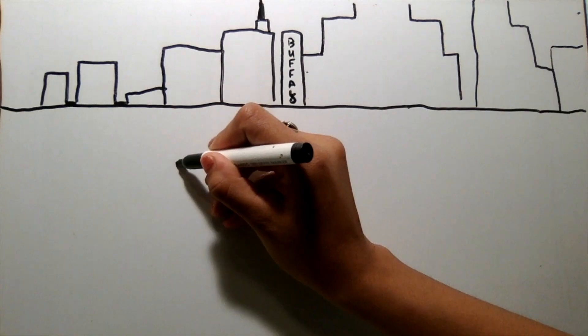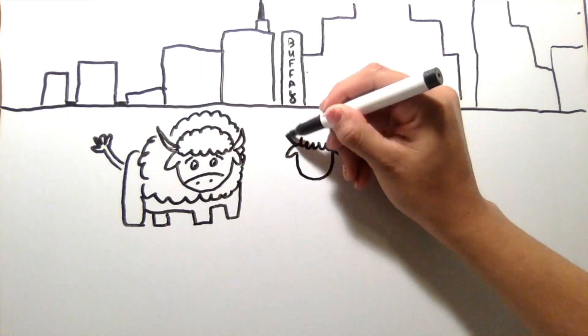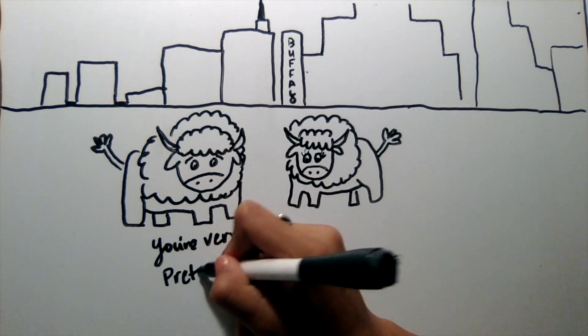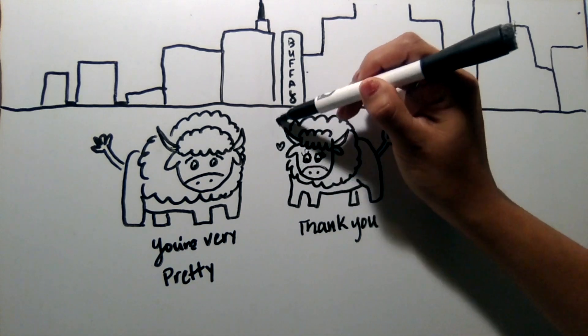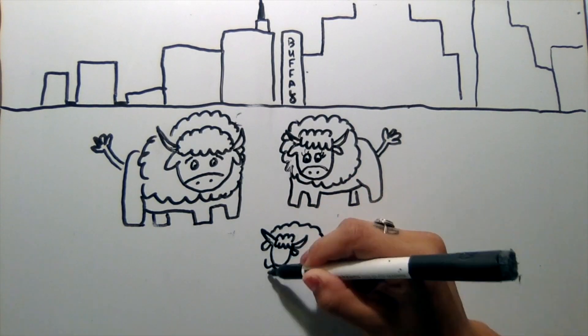In the city of Buffalo lived a buffalo. This buffalo met another buffalo who is also from Buffalo. He thought she was very pretty, and she was so flattered. They fell in love and had a little buffalo from Buffalo of their own.